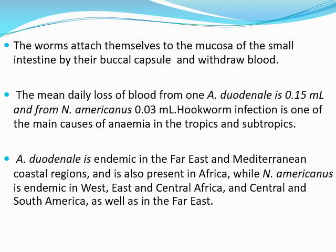الـ duodenale type is endemic in the Far East and Mediterranean coastal regions and is also present in Africa, while Necator americanus is endemic in the East, West, and Central Africa and Central and South America as well as in the Far East.